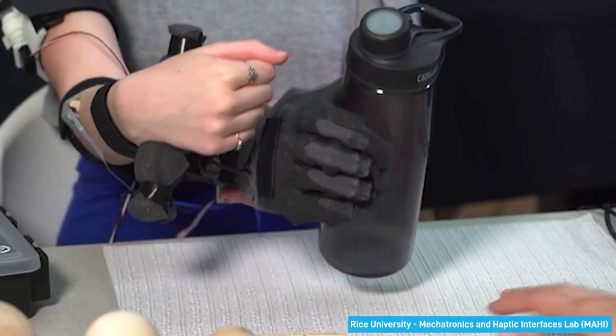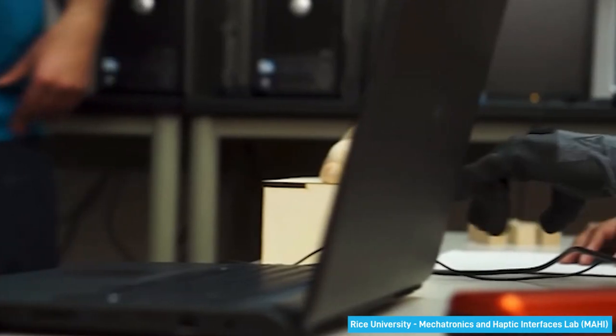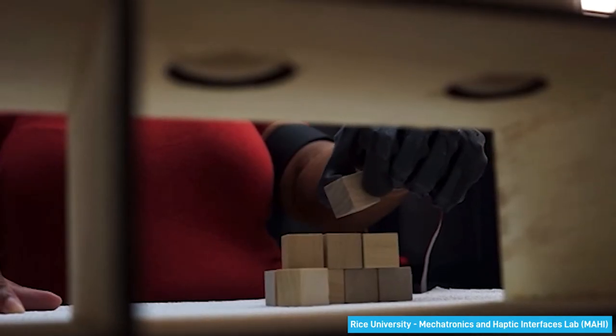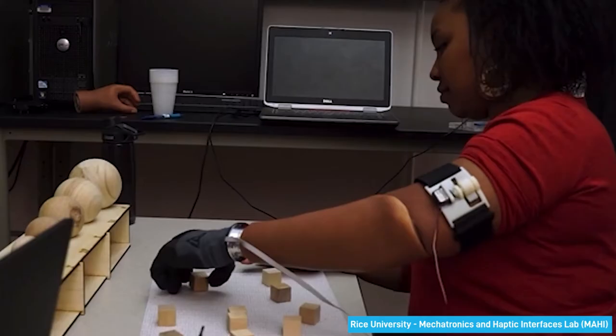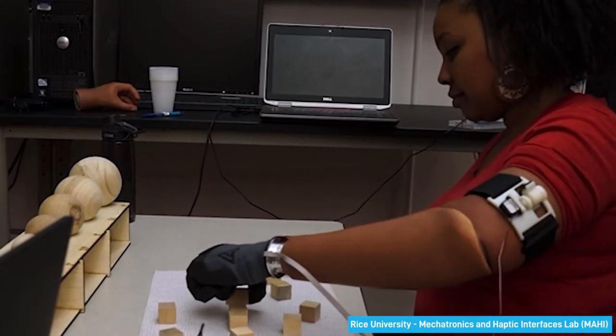The uses of these interfaces are numerous. For example, they can help with augmenting the human capability to interact with the real world. In extreme cases, this involves replacement of a lost limb. As you can see in this video, the participant is using a haptic interface to replace a lost arm and hand, which allows them to pick up objects.